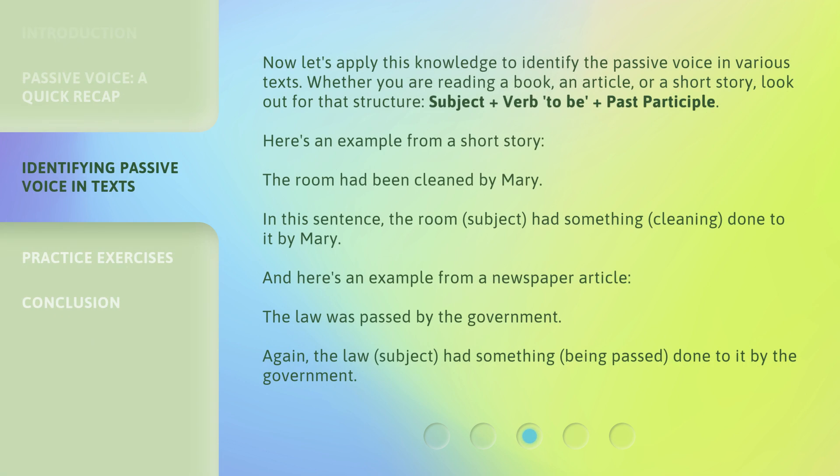Now, let's apply this knowledge to identify the passive voice in various texts. Whether you are reading a book, an article, or a short story, look out for that structure: subject + verb to be + past participle. Here's an example from a short story: 'The room had been cleaned by Mary.' In this sentence, the room (subject) had something — cleaning — done to it by Mary.